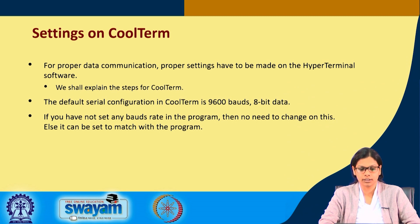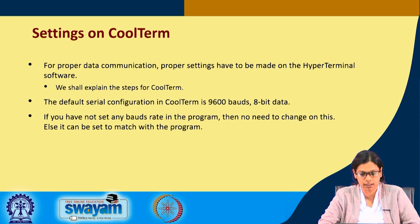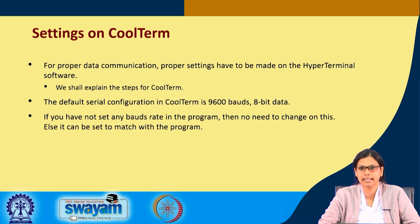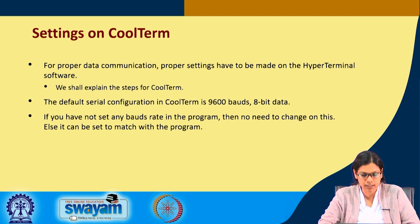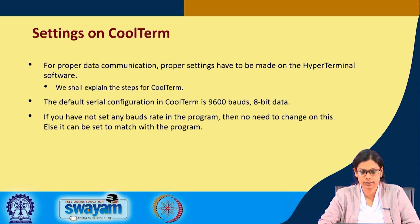For setting up CoolTerm, proper settings have to be made on the hyper terminal software for correct data communication. The default serial configuration in CoolTerm is 9600 baud rate and 8 bits. If you have not set any baud rate in the program, no need to change it; otherwise it can be set to match the program. This setting must be done prior to using CoolTerm.